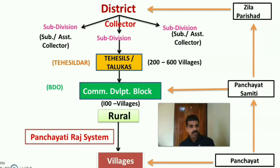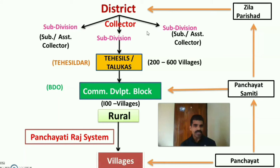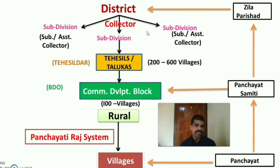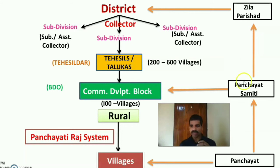Summary: Panjayati Raj system is a three-tiered structure of rural local self-government for the progression and development of villages. Districts are aided by the collector and divided into two or three subdivisions, each aided by a sub-collector or assistant collector. Each subdivision is divided into Tehsils or Talukas, aided by the Tahasildar. One Taluka or Tehsil consists of 200 to 600 villages, and each is divided into community development blocks of 100 villages, headed by the block development officer. The health system in the rural area of the district is managed by the Panjayati Raj system — at village level it is Panjayat, at block level it is Panjayat Samadhi, and at district level it is Zilla Parishat.